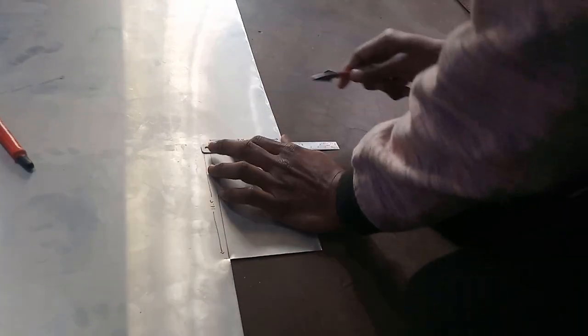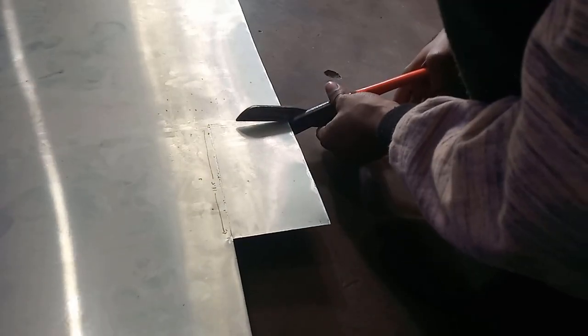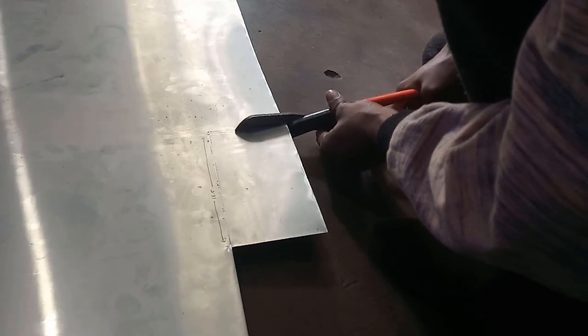First of all, I marked 16.5 centimeter length and 9.4 centimeter width on the sheet and started cutting with scissors because I don't have any fancier tool like a jigsaw.